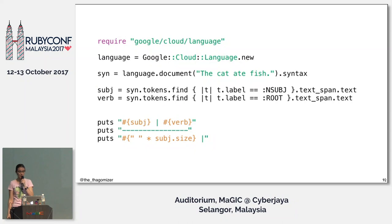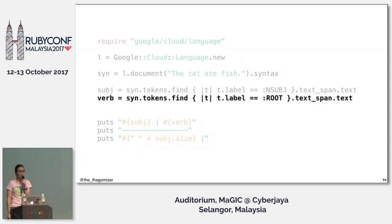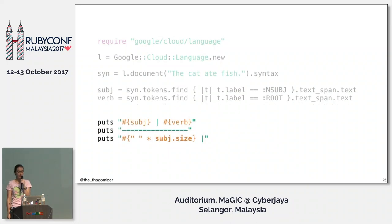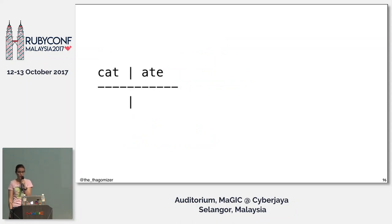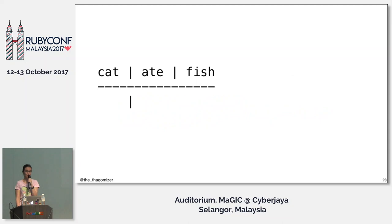I was able to write code that creates ASCII art versions of sentence diagrams. I find the token marked as the nominative subject and save that as 'subj,' find the token marked as the root and save it as 'verb,' then do some ASCII art with puts and some math. But that's kind of boring because I don't have all the words yet, so now I add direct objects — I find the direct object in the tokens, update my ASCII art, and get 'the cat ate fish.' Oh wait, I'm missing 'the.'